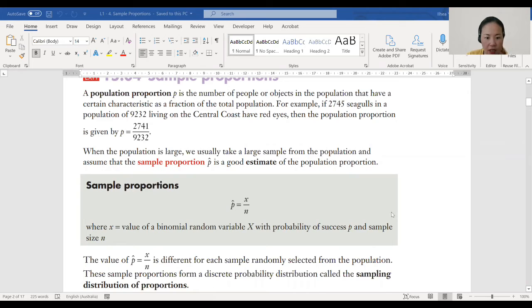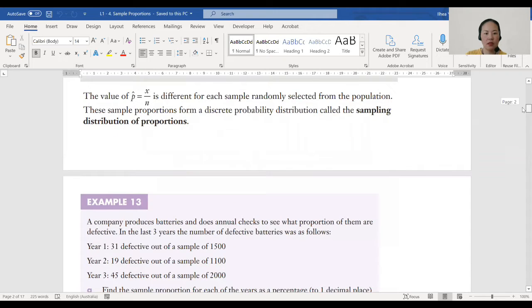Sample proportions formula is p hat equals x over n, where n is the sample size and x is the value of the binomial random variable. The value of p hat equals x over n is different for each sample randomly selected from the population. These sample proportions form a discrete probability distribution called the sampling distribution of proportions.